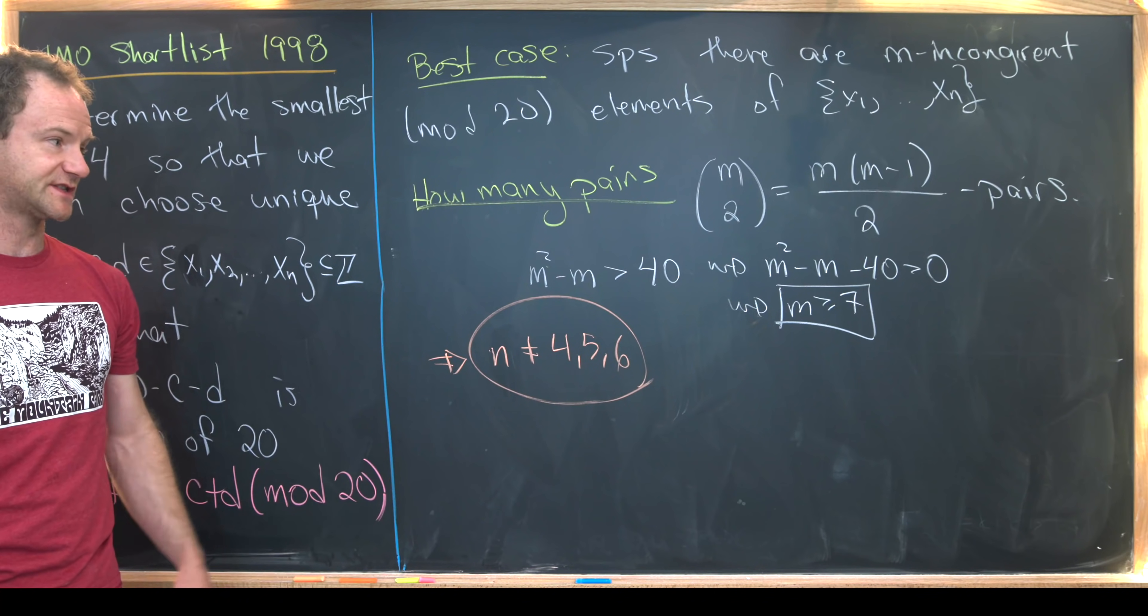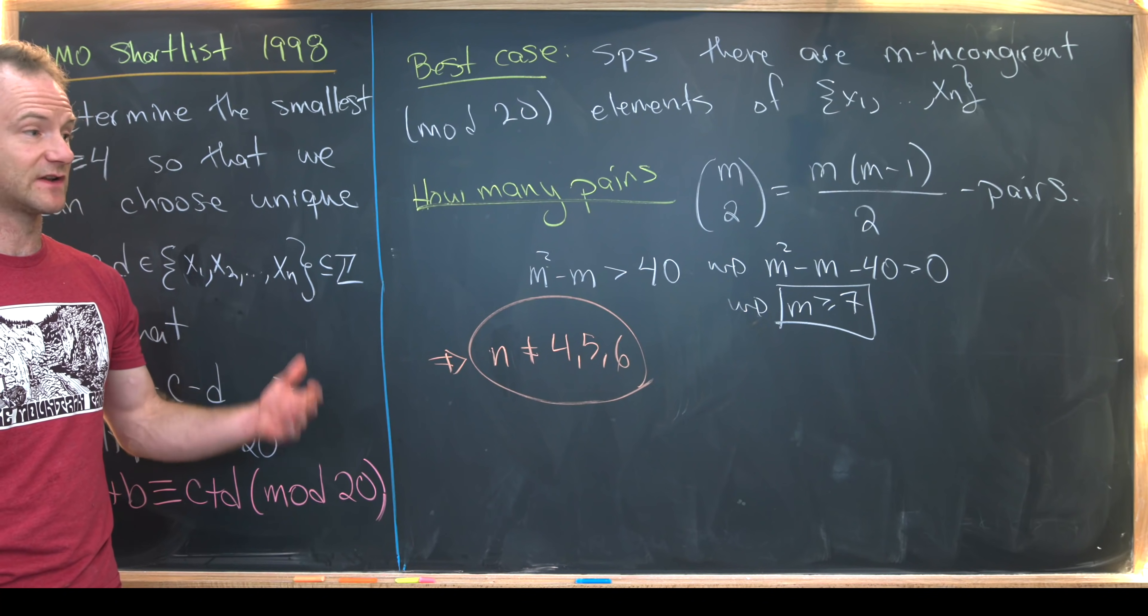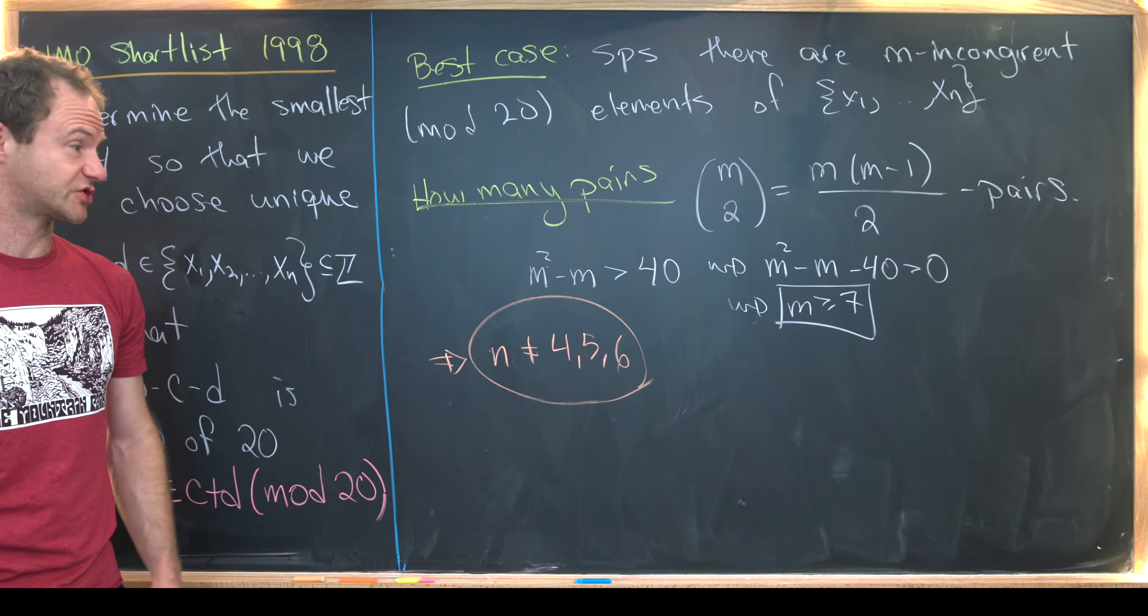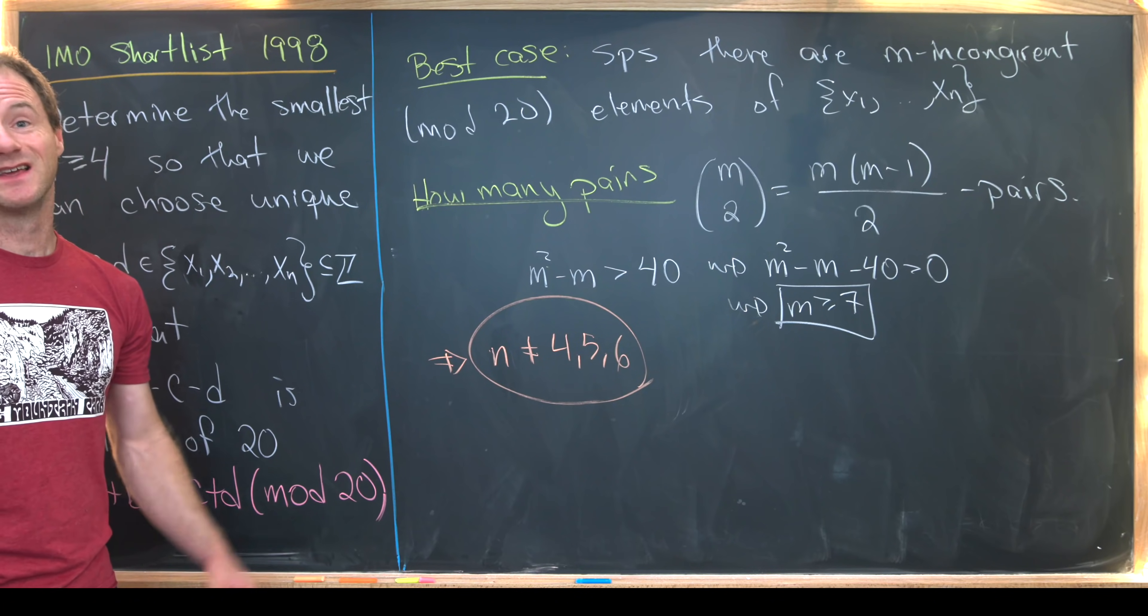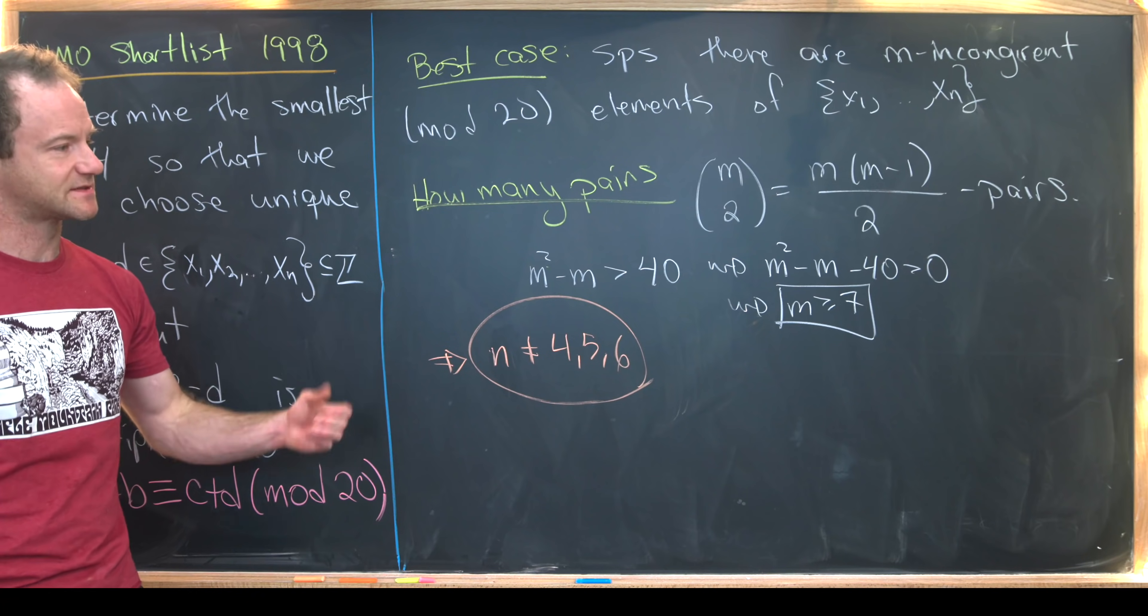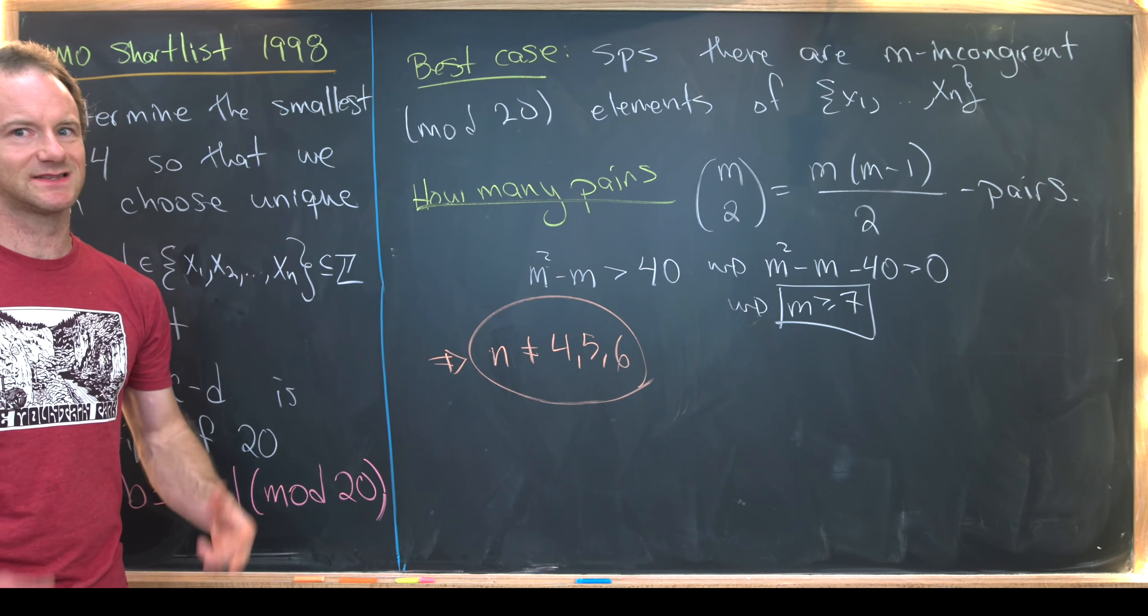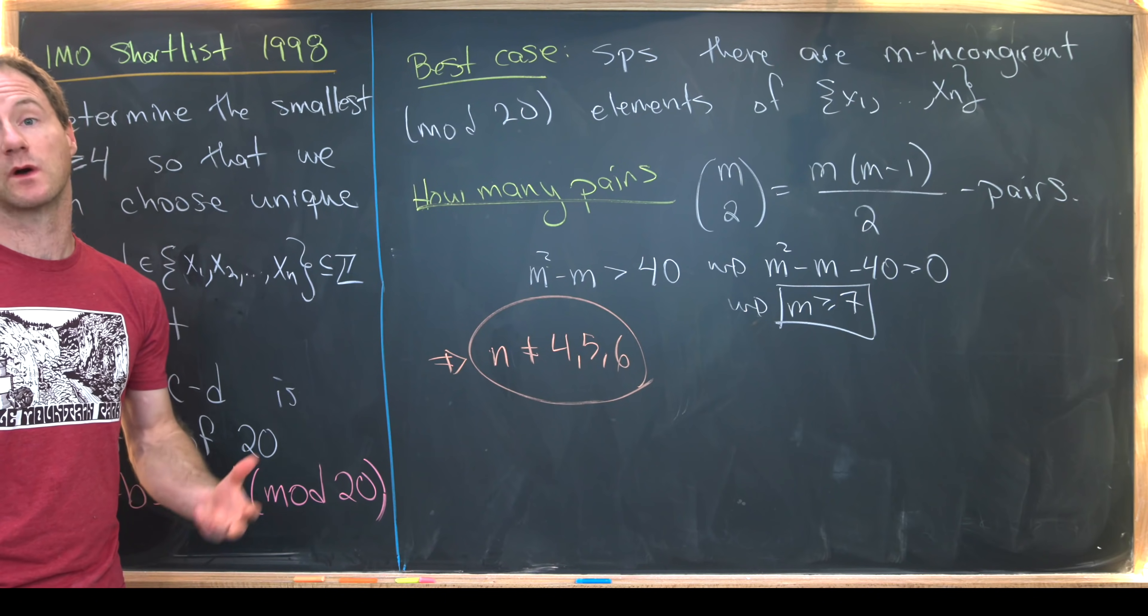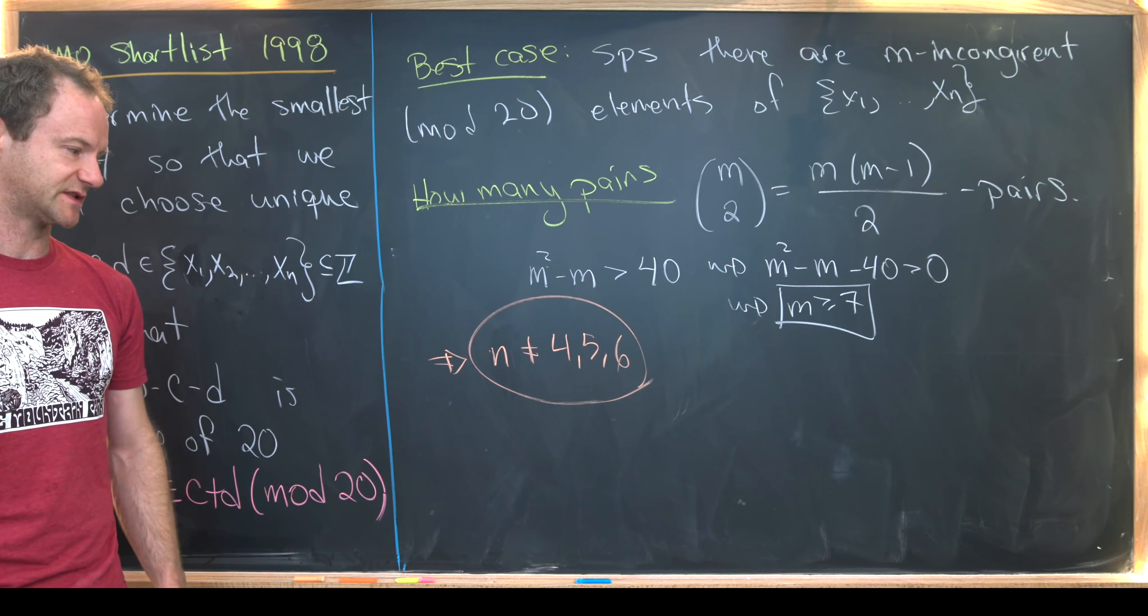And why is that? Well, if it's 4, 5, or 6, then we will most definitely not have seven incongruent elements. So it's probably easy to construct one of these sets that doesn't satisfy this property. But if a set has more than seven elements, it is not guaranteed to have more than seven incongruent elements or at least seven incongruent elements anyway.